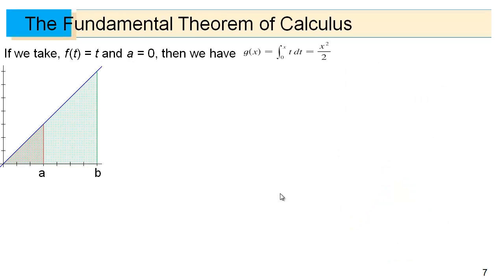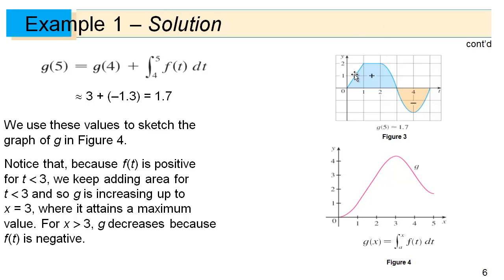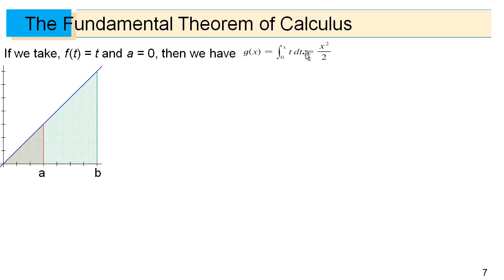Let's take a side note and do a quick proof we will need for the next piece of the Fundamental Theorem. If we take our function — in the previous slides our blue function was f of t — now our blue function is just going to be the simple function y equals x, a straight 45-degree line. If we take a equal to 0, then the g function — the area under the curve from 0 to x — is always just the area of a triangle, which ends up being x squared over 2.